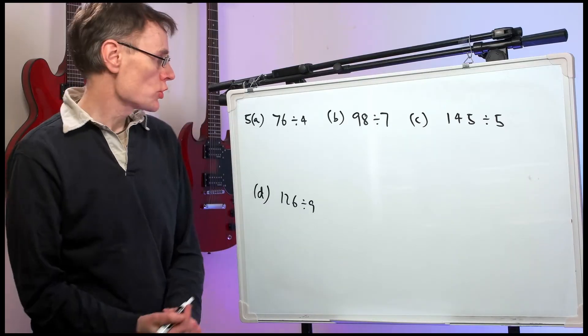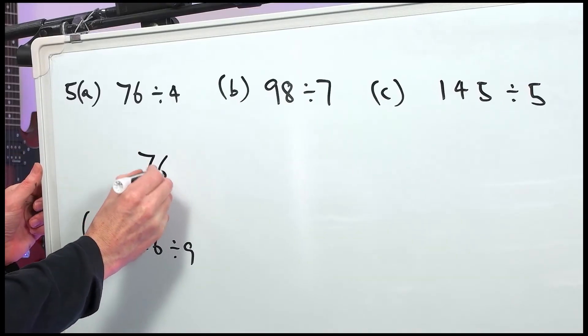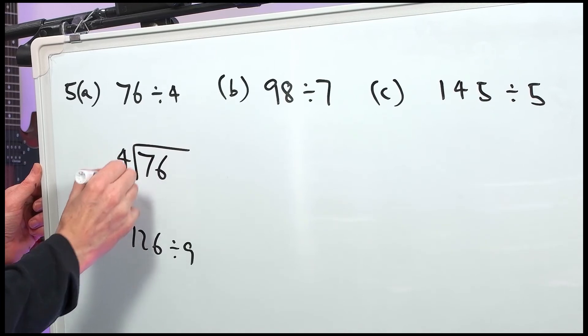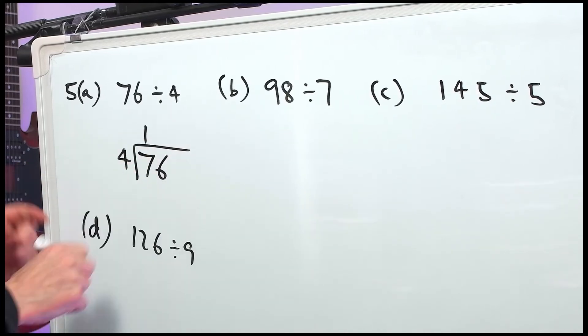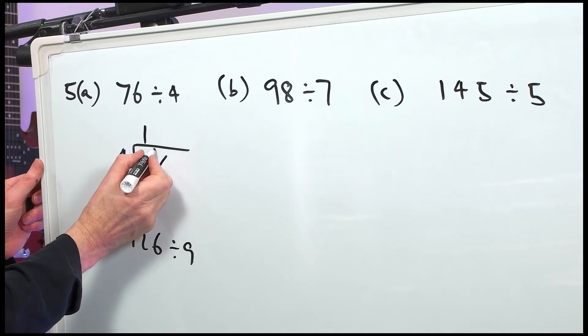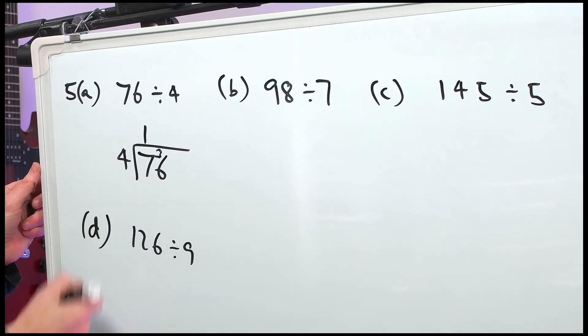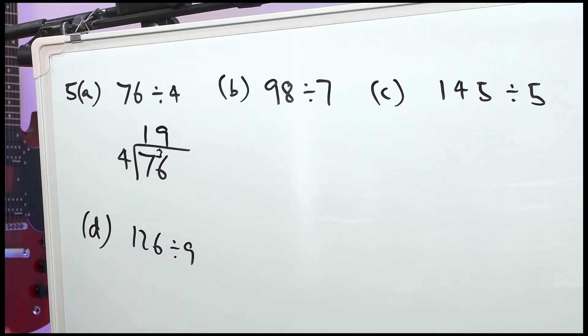Right. Question 5. We're doing some short division. 76 divided by 4. 4s into 7 go once. That's 4, 5, 6, 7. So, it's remainder 3. 4s into 36 go 9 times. 19.